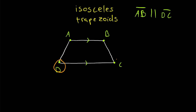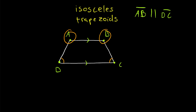Now you might wonder which pair of base angles are congruent — these two down here or these two up here. Well, it turns out it doesn't matter, because if one pair of base angles are congruent then the other pair will be congruent as well. So let's just say that angles D and C are congruent, and we'll show why the others must be congruent too.